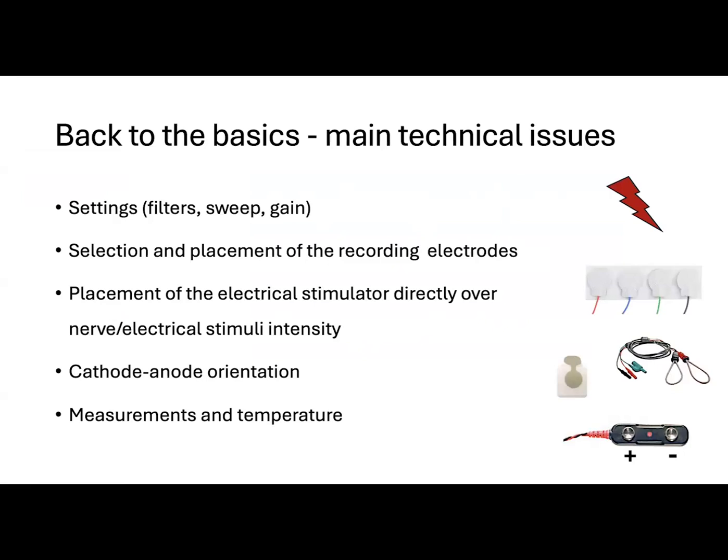Before I give you some examples, I will briefly discuss common technical problems that can affect your waveform recordings. To begin with, it's important to check the machine settings, to select the right electrodes, and to place them according to anatomic landmarks. The next step is to make sure you apply sufficient stimuli in order to depolarize all axons within the nerve, while avoiding overstimulation. We have to pay special attention to the orientation of the cathode to avoid inaccurate measurements that may affect conduction velocities and distal latencies, and potentially result in a node block.